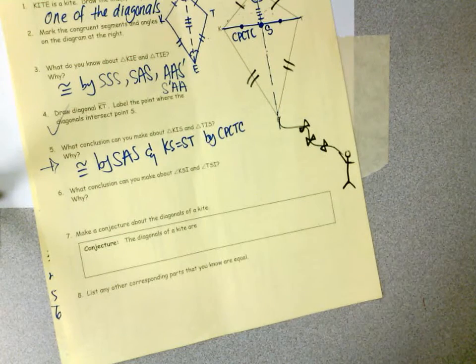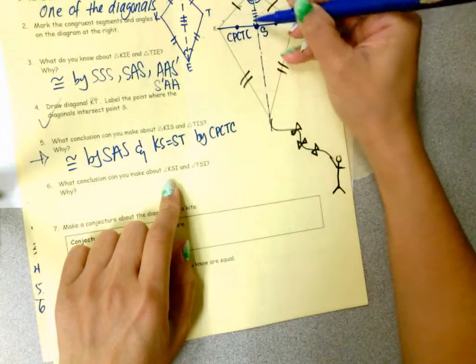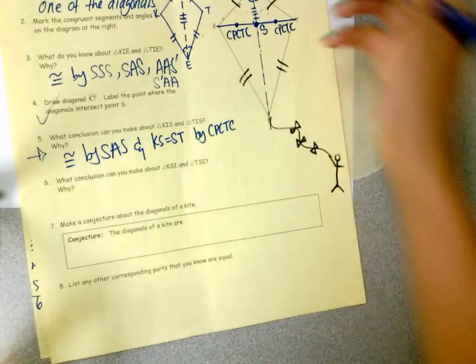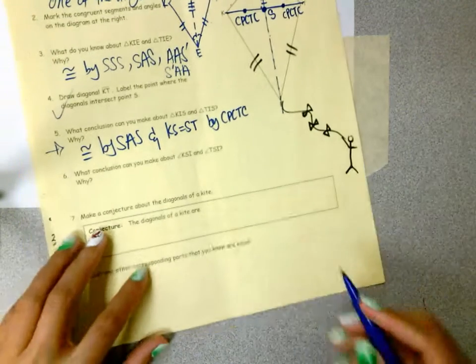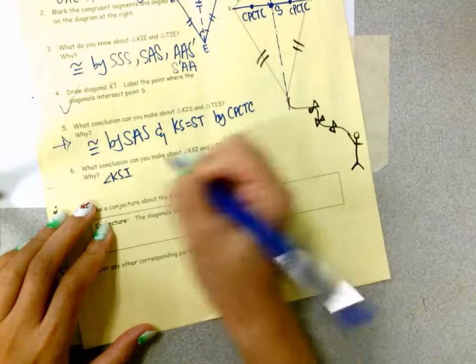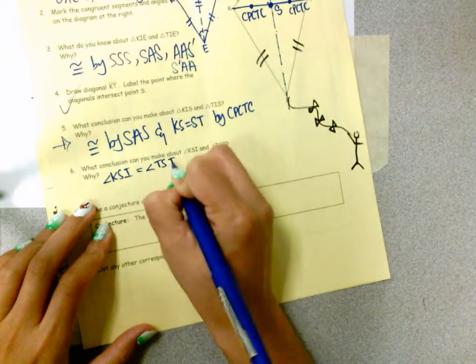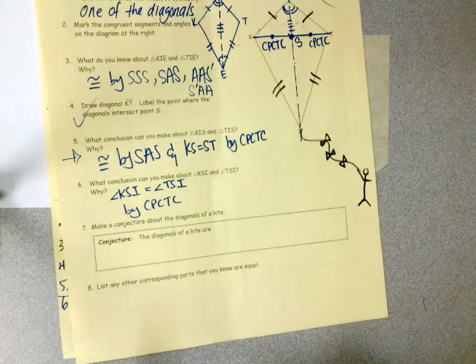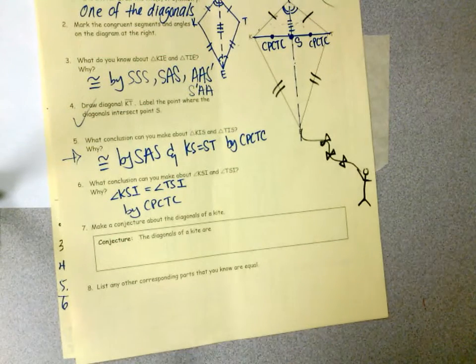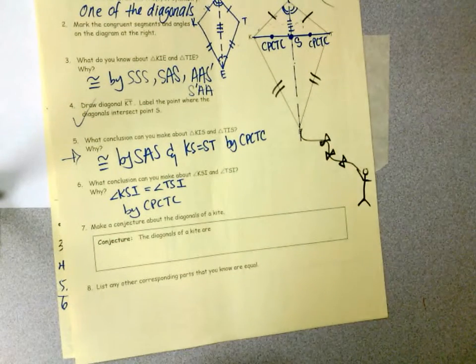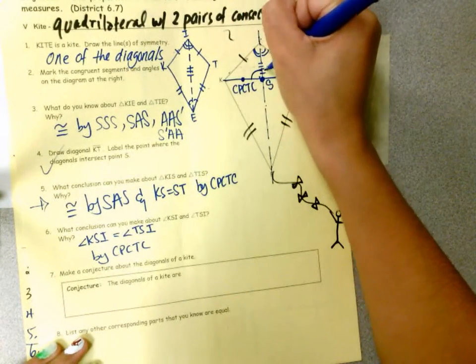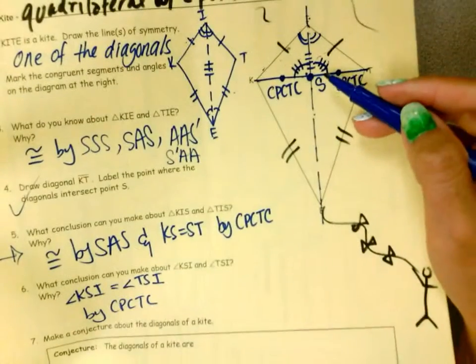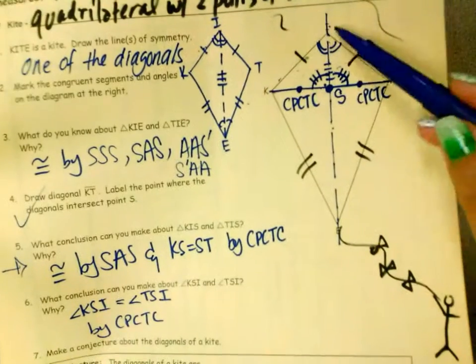So the answer will be yes because since the triangles are congruent, corresponding sides must be congruent. So these are congruent by CPCTC. We want to write that one down. KS is equal to ST by CPCTC. Okay, so that's what they're congruent by. So they're equal in that case. So we jot that down and they're asking you, what conclusion can you make about the angle KSI and then TSI? Since these two are congruent by CPCTC, why can't the angles be congruent? Or can't the angles be congruent? So you would say yes. The angle KSI is equal to the angle TSI because of CPCTC.